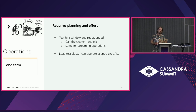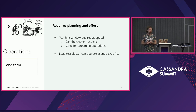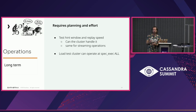Long-term operations: test your hint window and hint replay speed. People don't find out until a node has been down for an hour or two that they can't get it back up because hint replay is working too fast, or there are simply too many hints. Take the time to figure out the correct throttling rate for hint replays, especially when you have an hour or two's worth of hints accumulated.